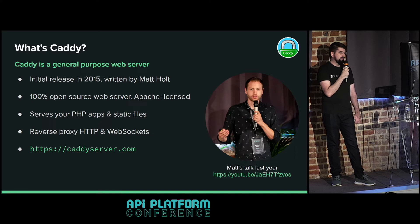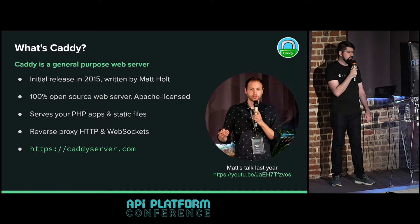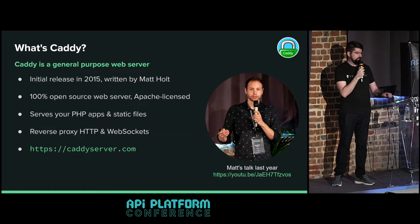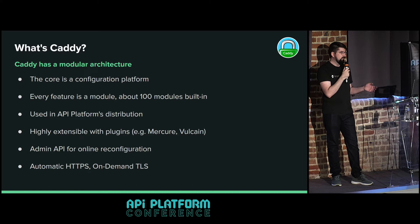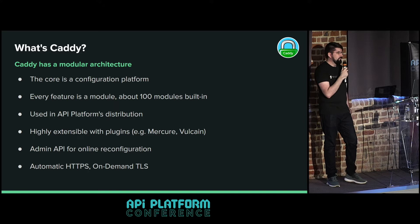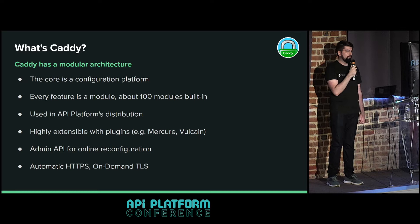Caddy will pipe that back to the client. In API Platform, this is used to proxy to your Next.js app. You can also proxy WebSocket connections, for example from a Node.js server or React PHP server. At its core, Caddy is a configuration platform - it reads in a config, parses it, loads it, and starts a server. Every feature in Caddy is a module, and the standard distribution comes with lots of modules built in.